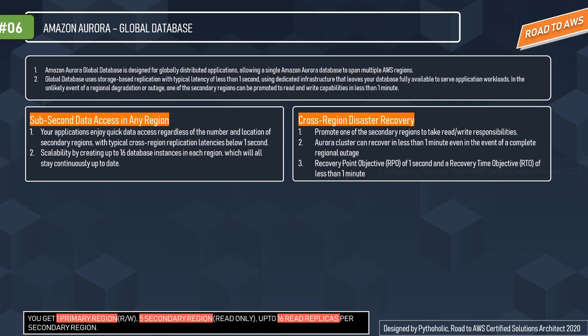There are two features to discuss. First is sub-second data access in any region. With a global database, regardless of the number and location of secondary regions, the typical cross-region replication latency is below one second — that is why it's called sub-second data access. And extending your database to additional regions has no impact on performance.